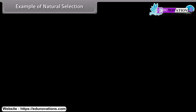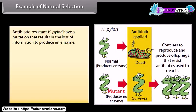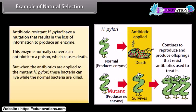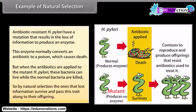Example of natural selection: antibiotic resistant H. Pylori have a mutation that results in the loss of information to produce an enzyme. This enzyme normally converts an antibiotic to a poison which causes death. But when antibiotics are applied to the mutant H. Pylori, these bacteria can live while the normal bacteria are killed. So, by natural selection, the one that lost information survives and passes this trait along to their offspring.